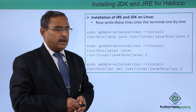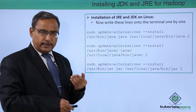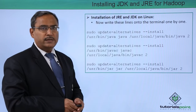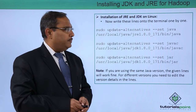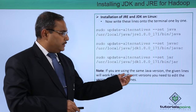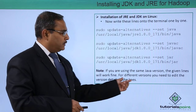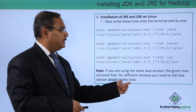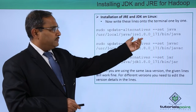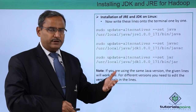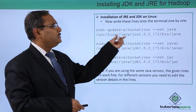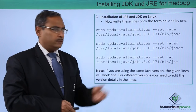Write these lines onto the terminal one by one after saving the gedit file. These separate lines are to be typed in order, maintaining the correct syntax. If you are using the same Java version, the given lines will work fine. For different versions, you need to edit the version details in the lines — for example, jre1.8.0_171. If using a newer version, check the folder names in /usr/local/java and update the commands accordingly.